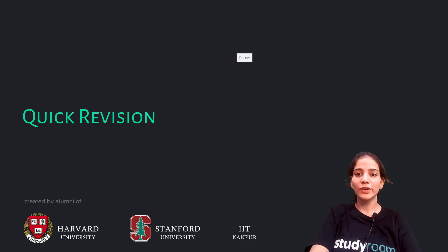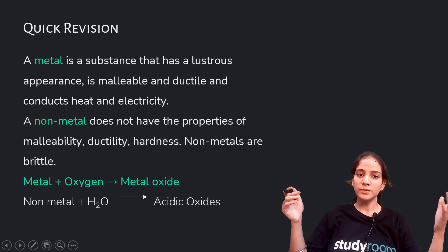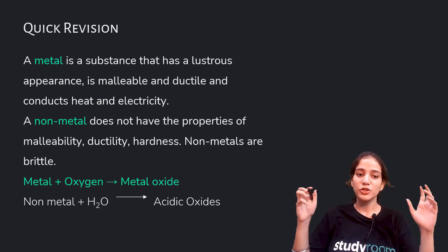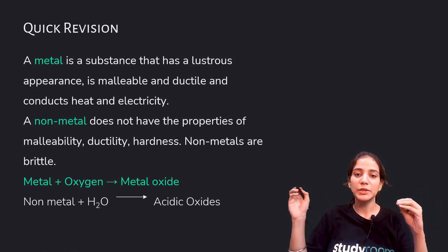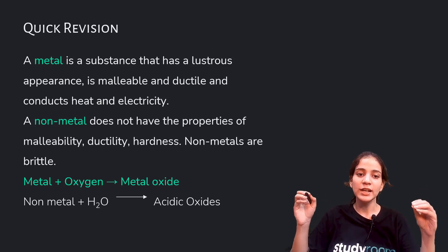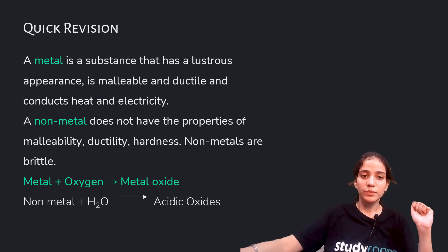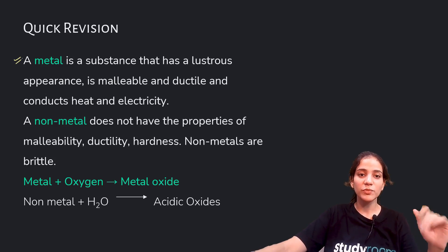Now time for a quick revision. A metal is a substance that has a lustrous appearance, is malleable and ductile, and conducts heat and electricity. You have to remember this perfect definition of metals.